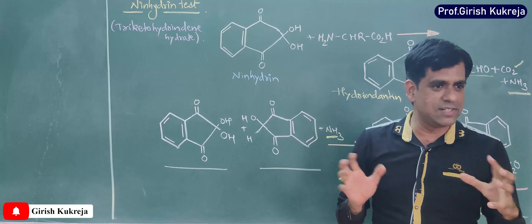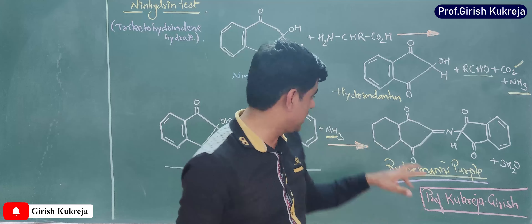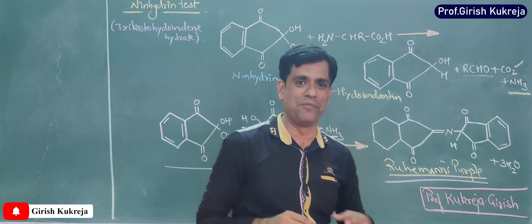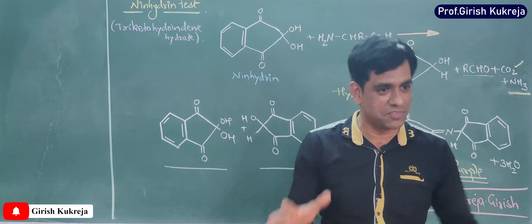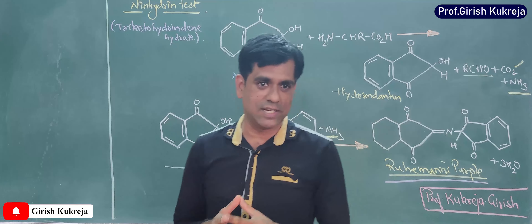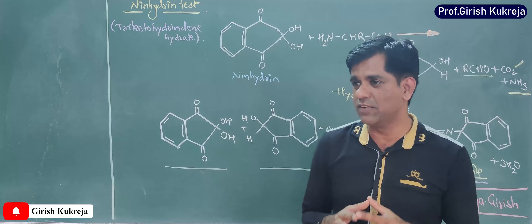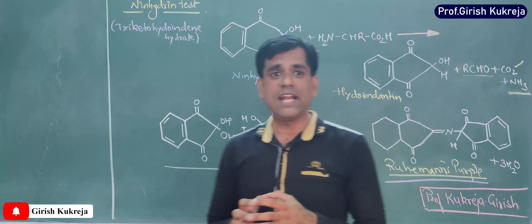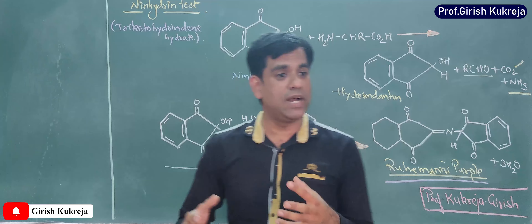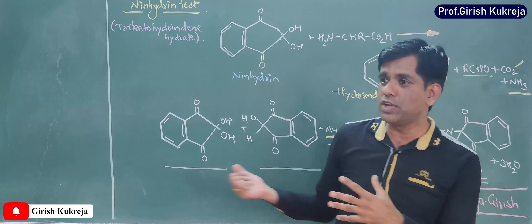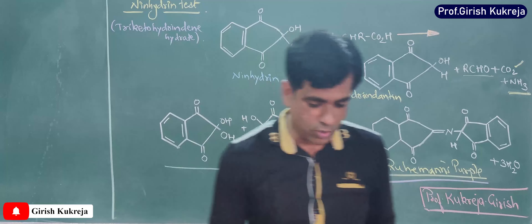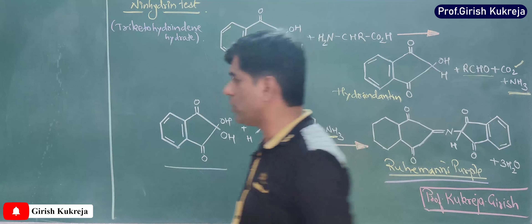Some amino acids, specifically proline and hydroxyproline, will give a yellow colored complex instead of purple — a different product is formed which is yellow in color. Asparagine also behaves differently: since it liberates a free amide group rather than ammonia, that amide group gives a brownish tinge to the purple complex.